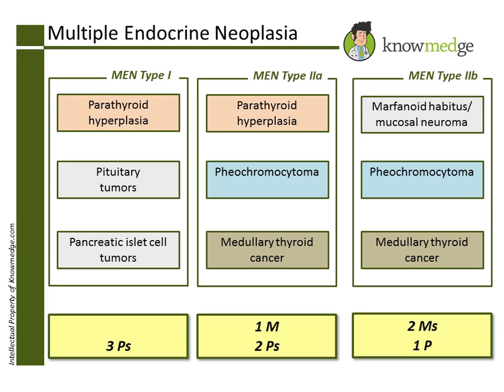Pancreatic islet cell tumors should be suspected in a patient with low sugar from hypoglycemia and high calcium, hypercalcemia. Pancreatic islet cell tumors are associated with MEN type I, not MEN type II.